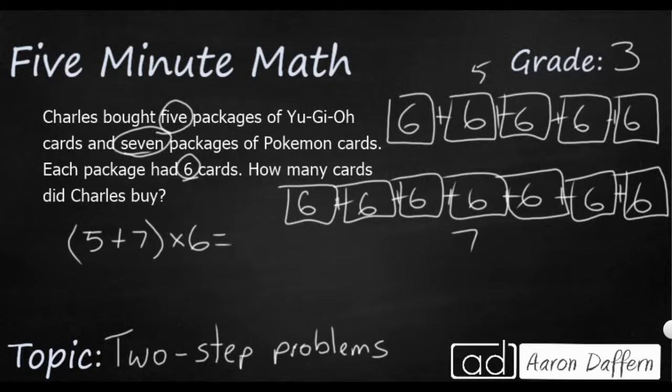So that means I need to do 12 times 6. That might be a fact that you know. If not, we could do a little two-digit by one-digit multiplication. So 2 times 6 is 12. We're going to carry that one. 6 times 1 is 6. Add that one back in, 72. So our answer is going to be 72 cards.